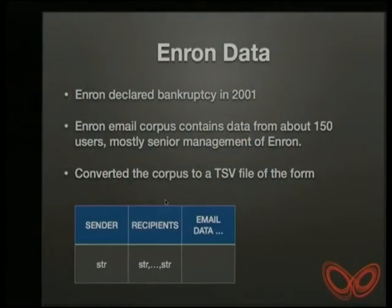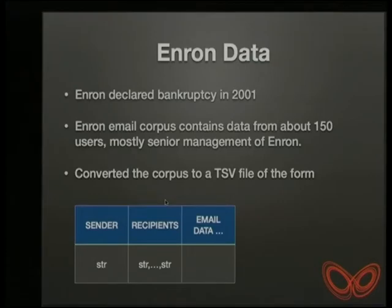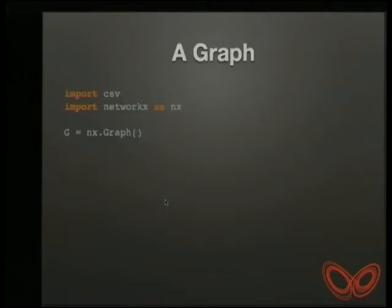A friend of mine was indexing these emails in a search engine, and I asked him to pull me out just a TSV file — a tab-separated file of just the sender and the recipient of the email. You can get a TSV file where the sender's email address is a single string, and the recipients are a comma-separated set of strings. I'd like to show you how we can pull this into NetworkX and hopefully do something useful with it.